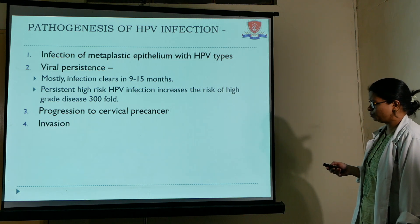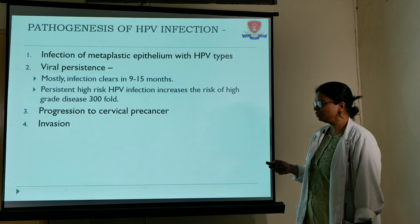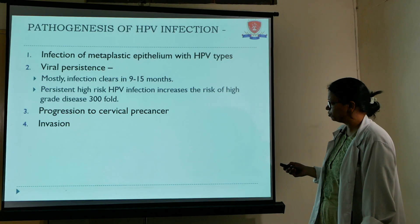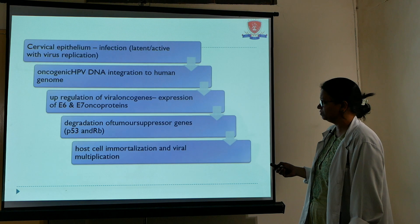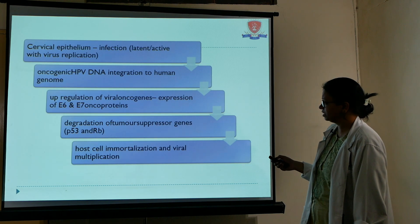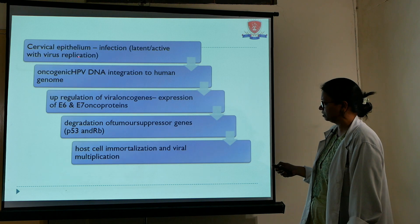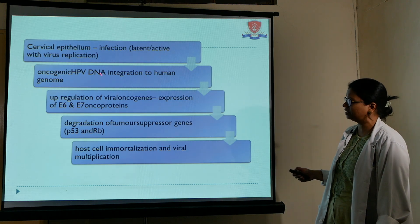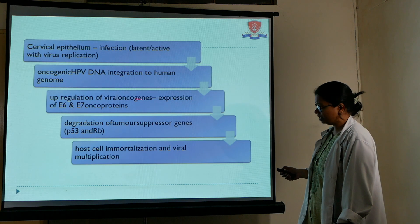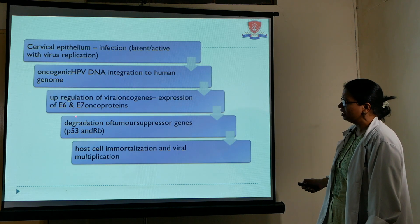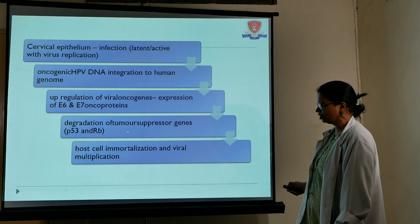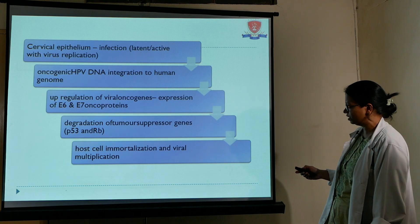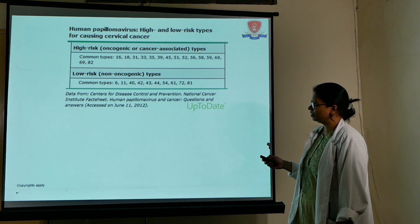Regarding pathogenesis: infection with HPV mostly clears in around 2 years, but where it persists it can lead to progression to cervical pre-cancer and finally invasive cancer. Oncogenic HPV integrates into the human genome in H-SIL lesions, causing upregulation of viral oncoproteins E6 and E7, which leads to degradation of tumor suppressor genes P53 and retinoblastoma, resulting in host cell immortalization and viral multiplication.